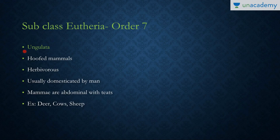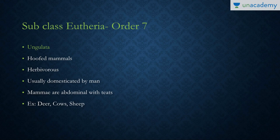The last order is Order 7, Ungulata. These are the hoofed animals. They are herbivores and can usually be domesticated by humans because of their mild nature. The mammae are abdominal and they have nipples. Examples include deer, cows, and sheep.